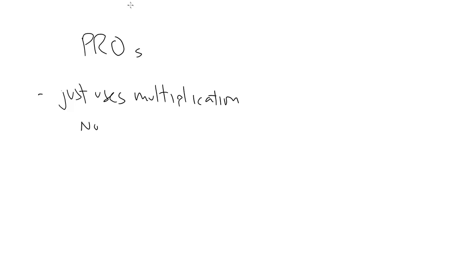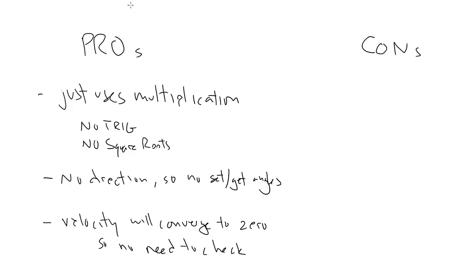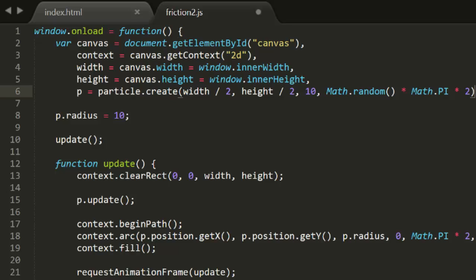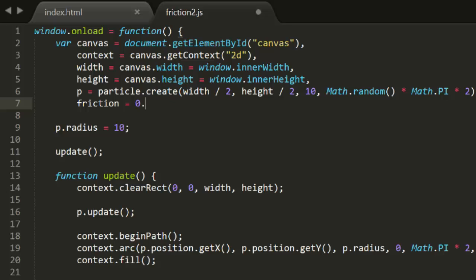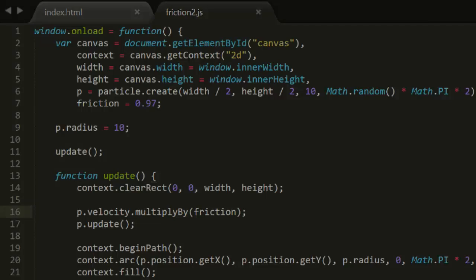The pros of this method are: one, it uses simple multiplication — no trig, no square roots. Two, friction in this case doesn't need to have a direction, so there's no getting or setting of angles. Three, there's no need to check if velocity is less than friction or if velocity is 0. But the cons: well, there's really only one — it's not real friction, so it looks different. But let's code it up. Going back to our original particle code, this time in friction2.js, I create a simple friction variable and set it to 0.97 — again, trial and error. In the update function, I simply say pVelocity.multiplyBy(friction). That's all we need to do. In VectorMultiplyBy, all we're doing is two simple multiplication operations, not even any other method calls. Super simple. Super fast.